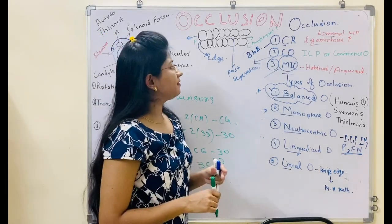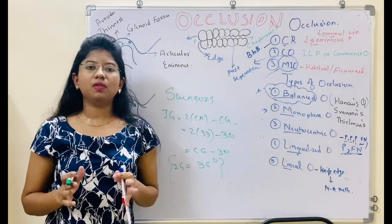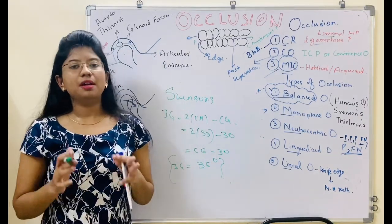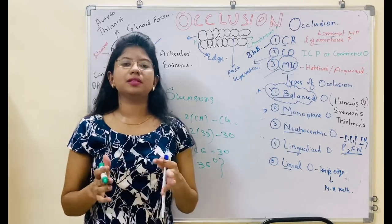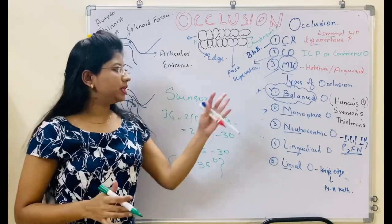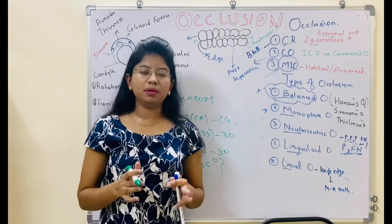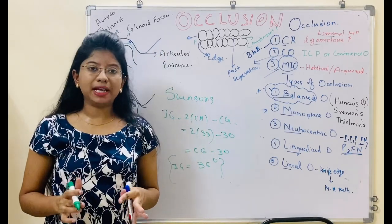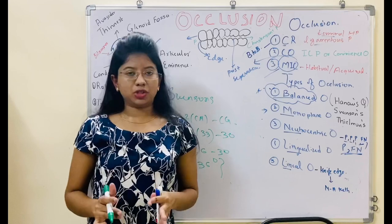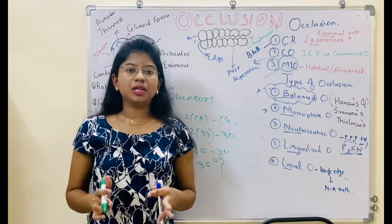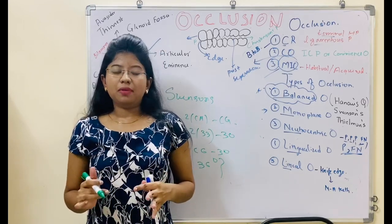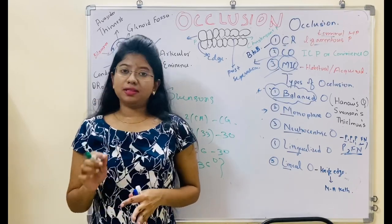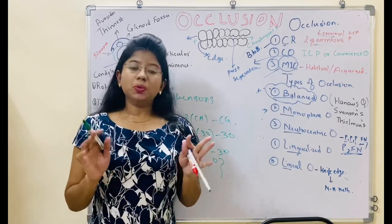To summarize, we have covered centric relation, centric occlusion, maximum intercuspation, rotation, translation, working side, non-working side, Christensen's phenomena, different types of occlusion, Thilman's formula and Swenson's formula. I hope you have understood the topic. If you have any doubts, please mention them in the comment box and I will try to solve them. Please don't forget to press the subscribe button. Thank you so much.